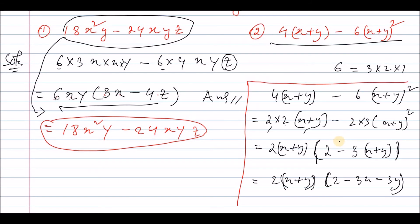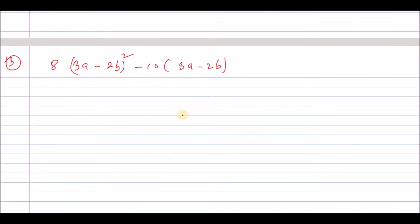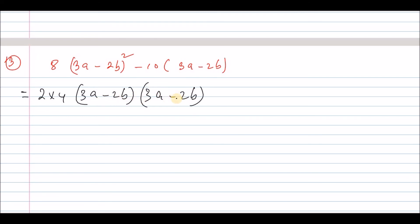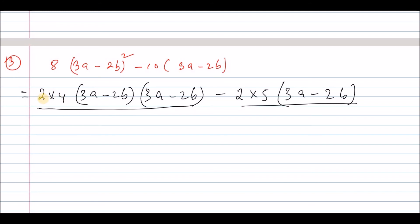The next number: we have 2 into 4(3a minus b) minus 10(3a minus 2b). The common factor here is (3a minus 2b). So we have three a minus two b as the common, giving (3a minus 2b) whole square, and then minus 2 into 5(3a minus 2b).